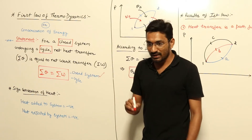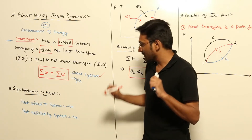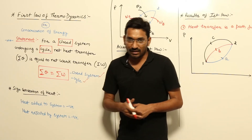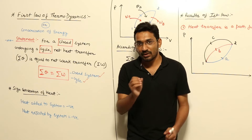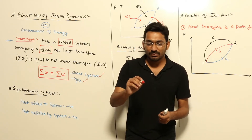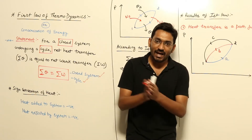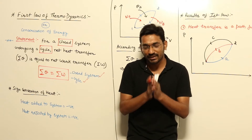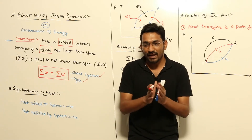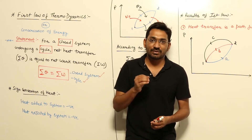The system must be closed, meaning there is no mass transfer — only energy transfer can take place — and that system must undergo a thermodynamic cycle. A thermodynamic cycle means the initial and final points of that process are the same.